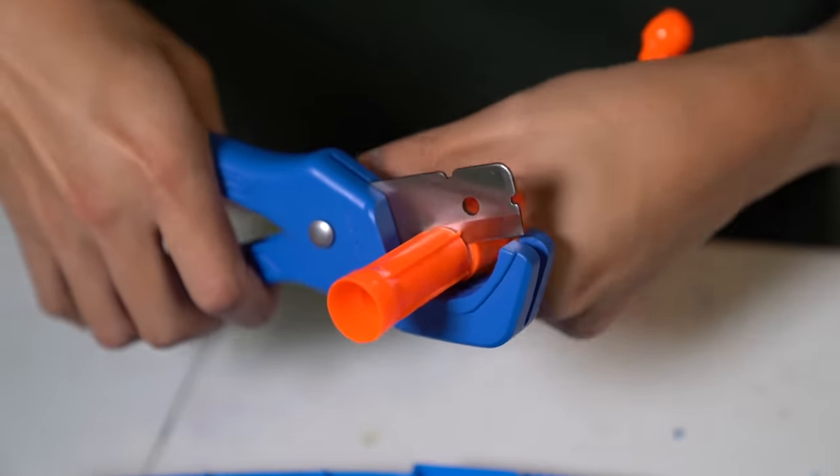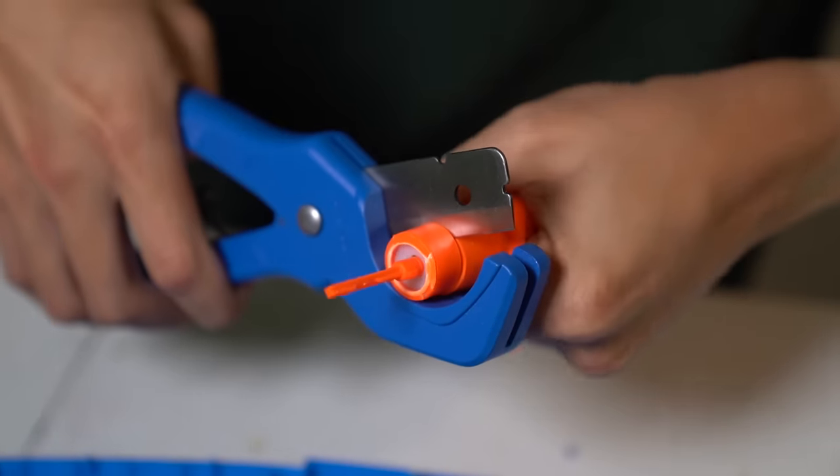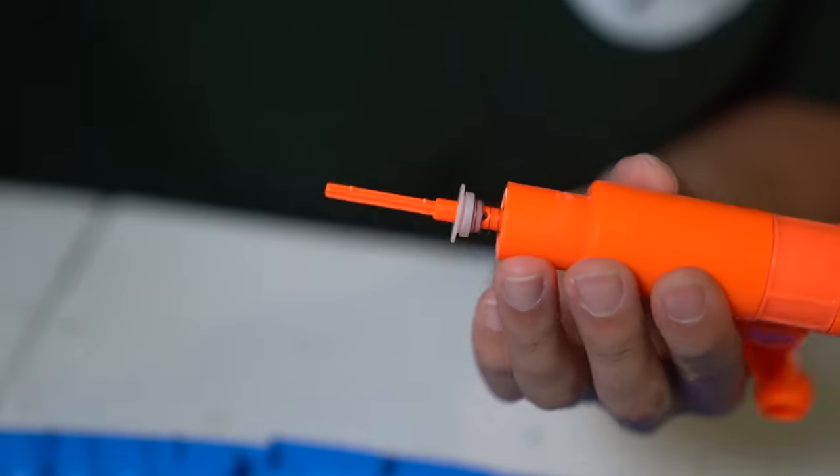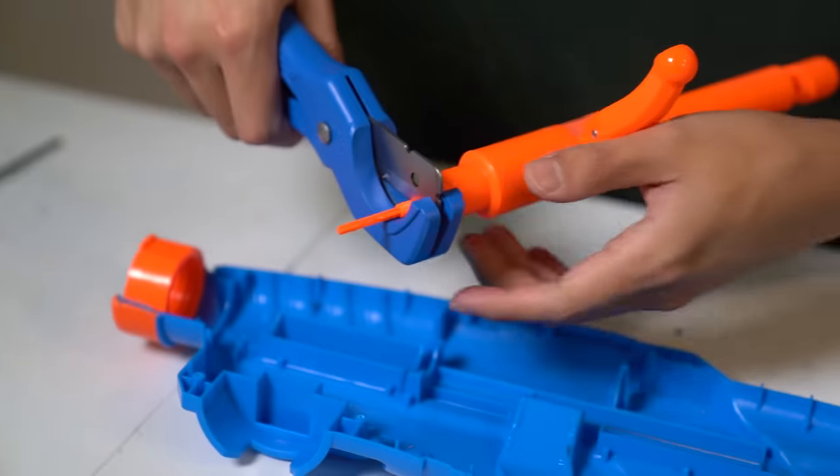The first thing I did was chop off the original barrel, and underneath that was the air restrictor. Its job is to prevent you from putting things other than foam darts into the barrel, but it also restricts the flow of air a lot, so we're gonna get rid of it.